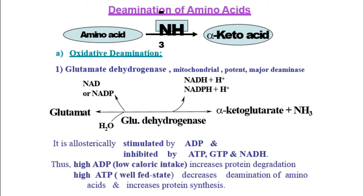For this process, ADP is essential because it stimulates the reaction, while products like ATP, GTP, and NADH inhibit it. Therefore, high ATP content — when you are in a well-fed state — decreases deamination of amino acids and promotes protein synthesis. Conversely, when starving, high ADP levels promote protein breakdown because body tissues are lacking energy.